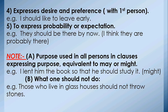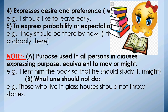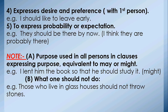Note: 'should' is used in all persons in clauses expressing purpose, equivalent to 'may' or 'might.' Purpose में 'may' और 'might' की तरह 'should' का use भी किया जाता है। For example: 'I lent him the book so that he should study it.' — मैंने उसको book दी ताकि वह study कर सके। We can also use 'might' in this sentence.